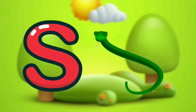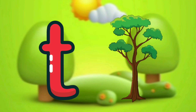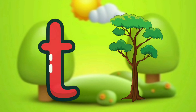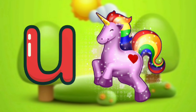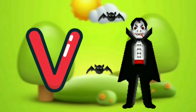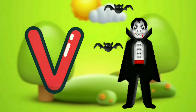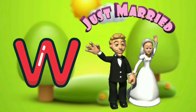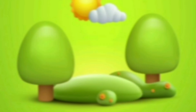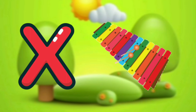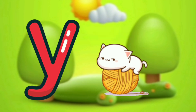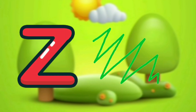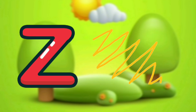S for snake, la-la-la. T for tree, la-la-la. U for unicorn, la-la-la. V for vampire, la-la-la. W for wedding, la-la-la. X for xylophone, la-la-la. Y for yarn, la-la-la. Z for zigzag, la-la-la.